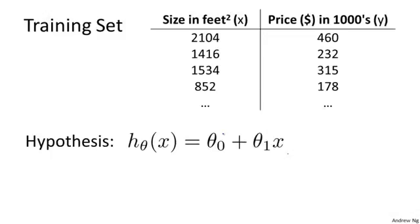In linear regression, we have a training set like that shown here. Remember our notation, m was the number of training examples, so maybe m equals 47. And the form of our hypothesis, which we use to make predictions, is this linear function.